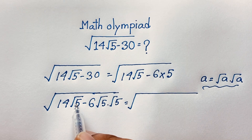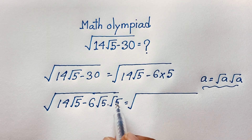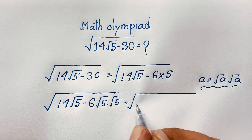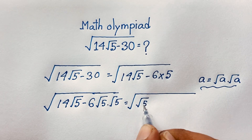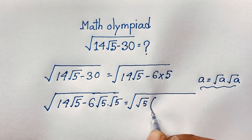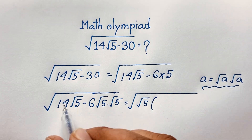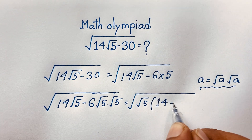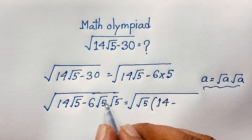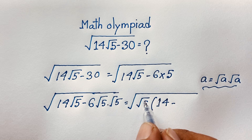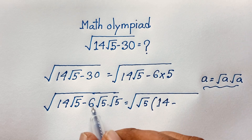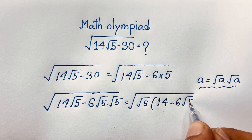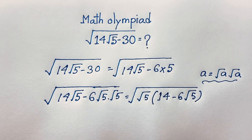Now we can see that √5 is common in both terms. Taking √5 as common factor: √5 times (14 minus 6√5). Here, dividing each term by √5 gives 14, and the √5 terms cancel to give 6√5.